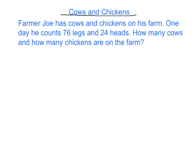The last question we're going to look at today for our test on Tuesday is the cows and chickens question. Farmer Joe has cows and chickens on his farm. One day he counts 76 legs and 24 heads. How many cows and how many chickens are on the farm? We did this in class and there are several ways to tackle it — some people drew a table, some drew little cows and chickens. All of this is fine. When tackling algebra word problems, it's really about problem solving and not the strategy you use. I don't mind what strategy you use as long as you explain your thinking clearly.